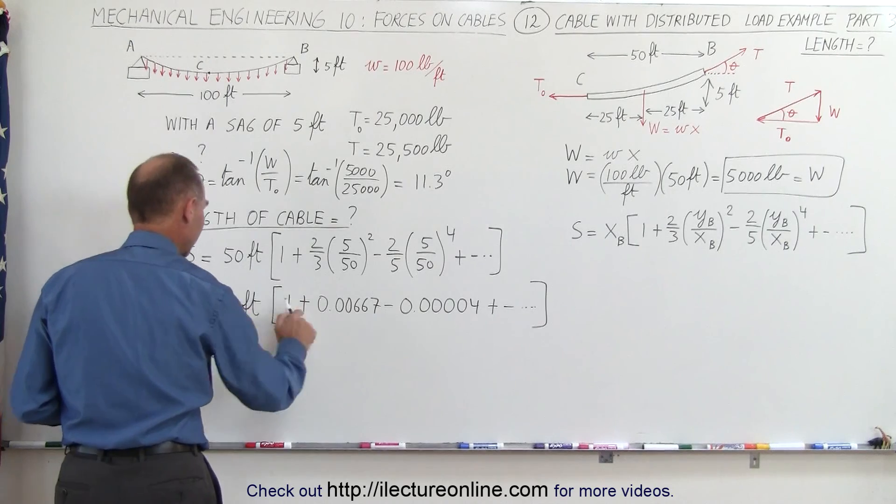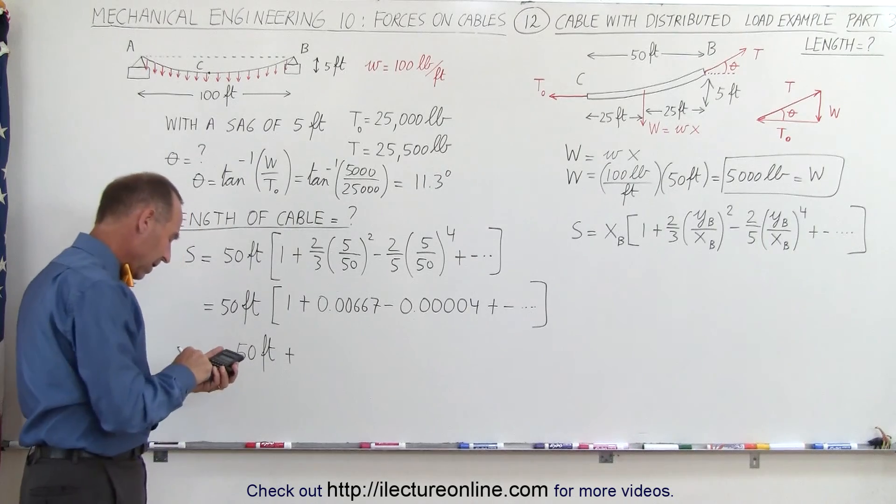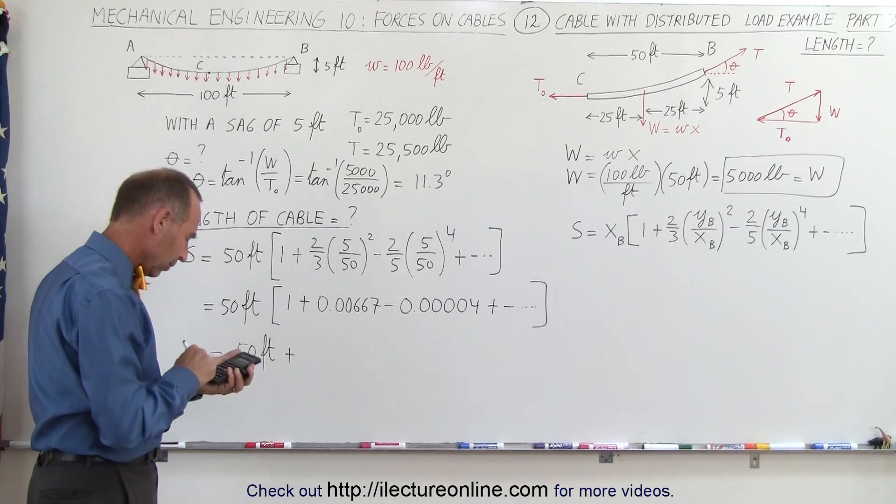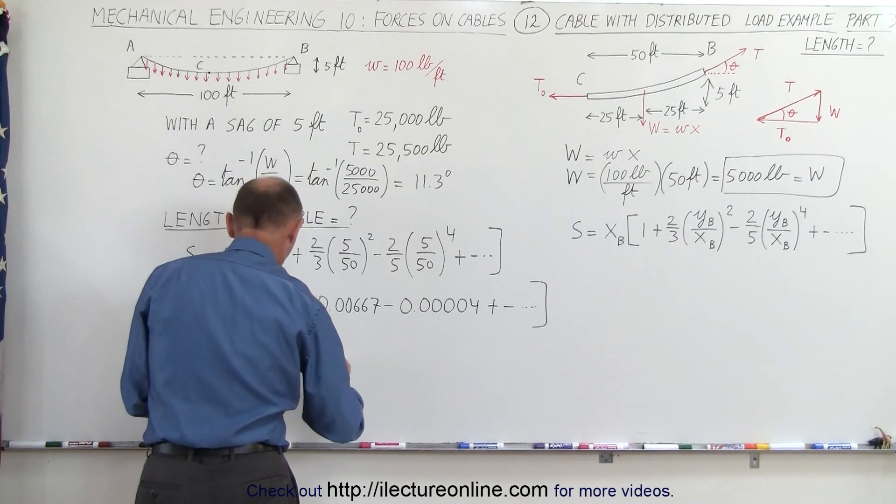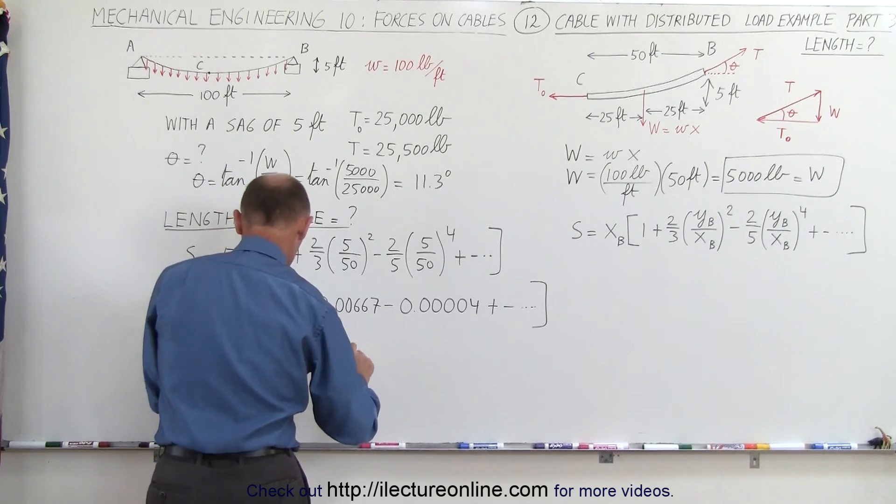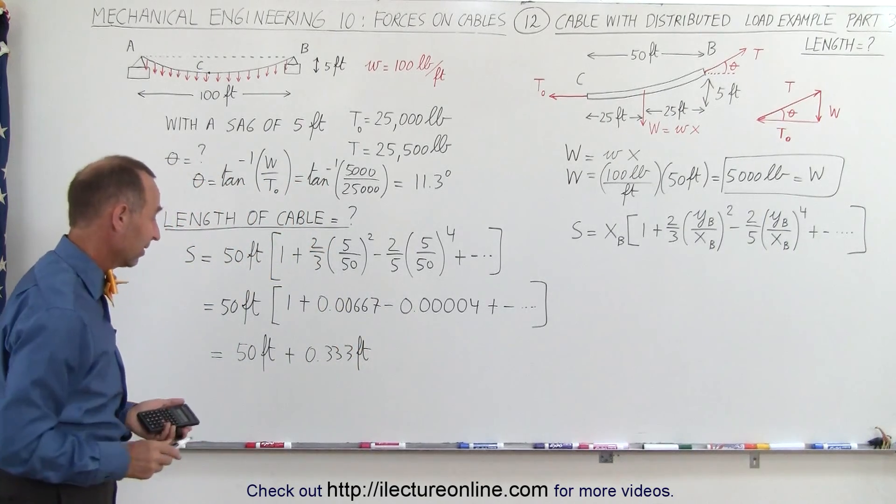This is equal to 50 times 1, of course that's 50 feet, plus 50 times 0.006667 equals, that would be 0.333 feet to three significant figures. Of course they're not that significant.